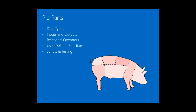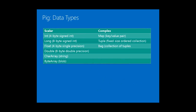Let's dig in and look at PIG at a lower level so you understand exactly what's in this tool within Hadoop. We'll start with data types, because data types are important. We'll talk about inputs and outputs — ways to load data and get data out of our jobs. We'll cover some of the relational operators available, as well as user-defined functions and how to create them. Then I'll introduce you to PIG scripts and ways we can test within PIG. All the content is in the slides, which I've built so you can work directly from them.